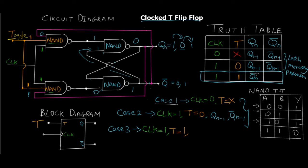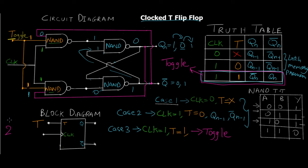This is the toggle state: Q-n becomes Q-n-bar and Q-bar-n becomes Q-n. Toggle is basically flipping between ones and zeros — if the previous value is one, the next is zero, and if the previous value is zero, the next is one. There are no more cases because we have only one input, giving two raised to one equals two combinations. When clock is zero we stay in previous state, and when clock is high there are only two combinations since both circuit lines are directly joined with no complement in between.